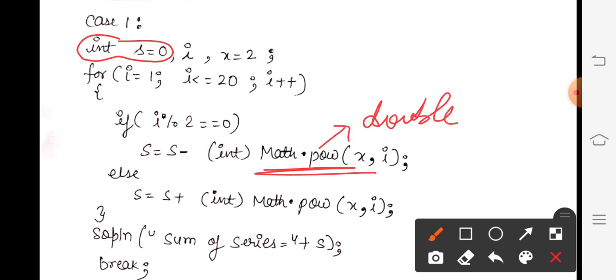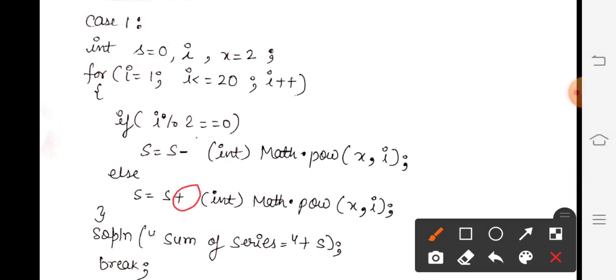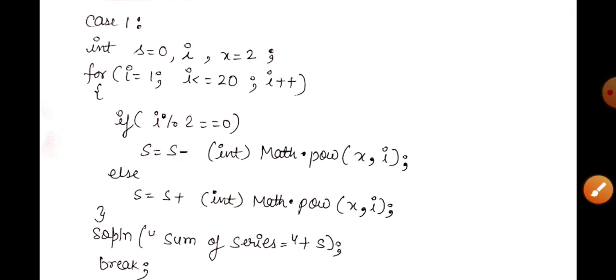And why are we writing negative sign? Because given in the question that if it is even number, then minus sign. And else, if it is odd, then for odd what should happen? s = s + (int)Math.pow(x, i). The difference is only with the plus sign and minus sign, otherwise rest of the things are completely same.